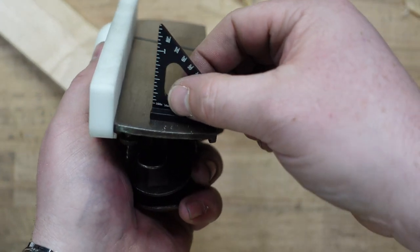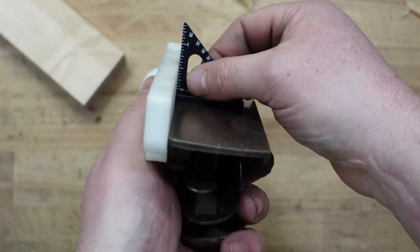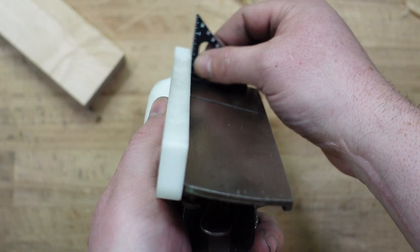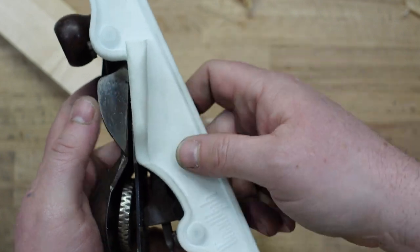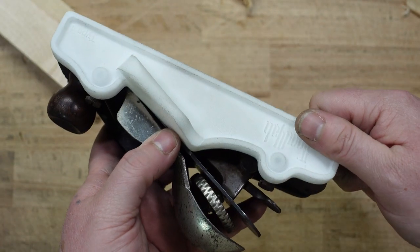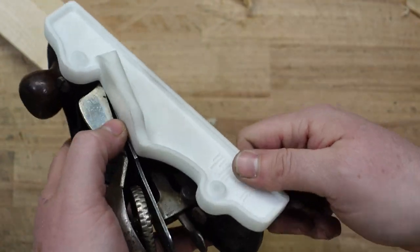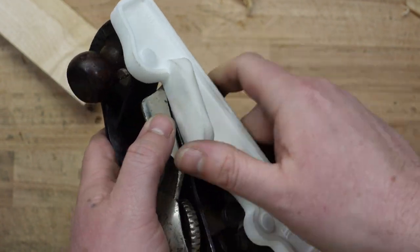The first thing I did check is that it is square, so it's squared to the bottom of the plane. I'd be pretty disappointed if it wasn't, but it is. I definitely checked it out. It's made out of a thermoplastic.